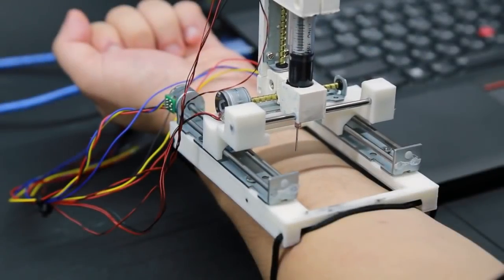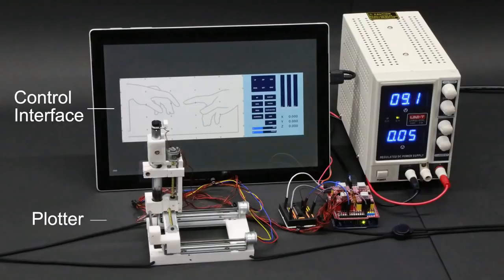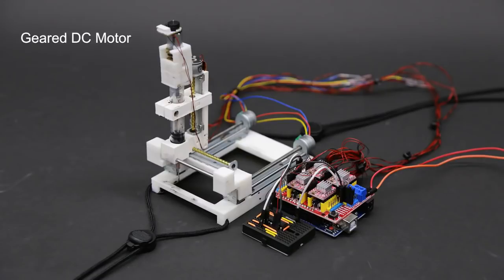Body printer prints circuits directly on the skin. The system consists of a plotter and a software control interface. The plotter includes an ink extruder driven by stepper motors.